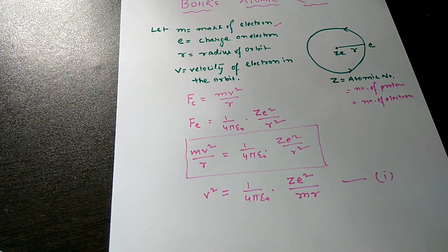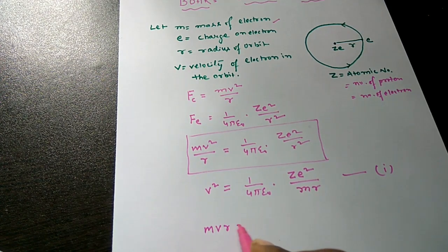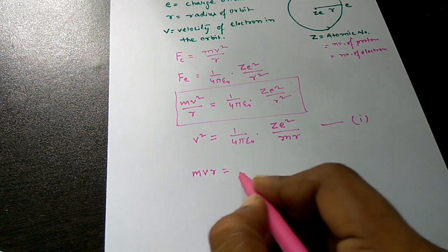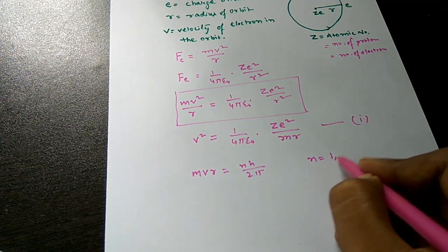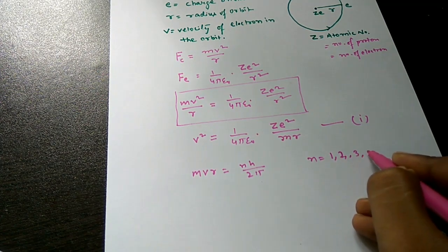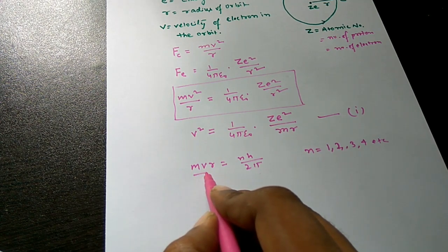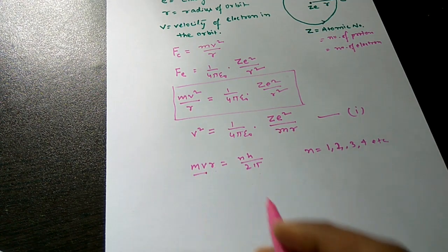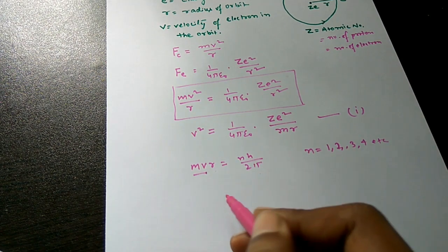From Bohr's atomic model, the angular momentum of the electron in its orbit equals an integral multiple of h/2π, where h is Planck's constant. So MVR = nh/2π, where n can be any integer: 1, 2, 3... The linear momentum multiplied by the radius gives angular momentum.